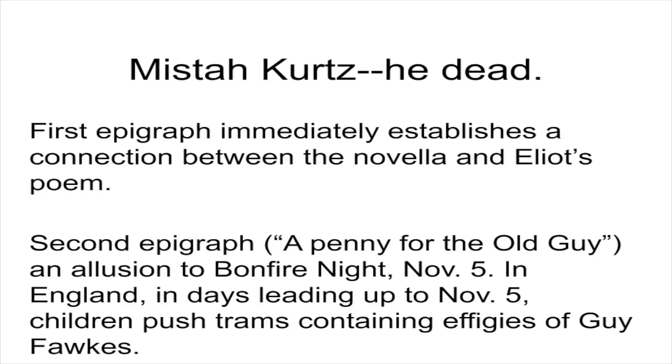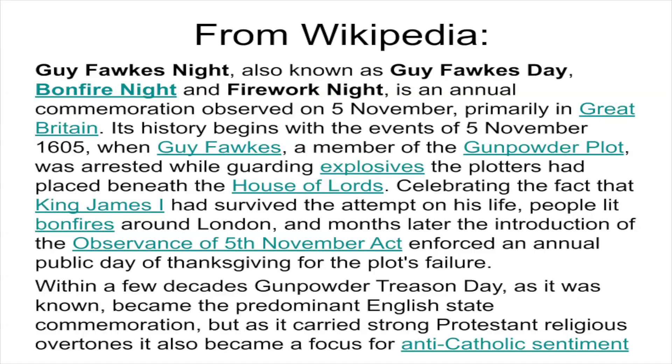'A Penny for the Old Guy' is a reference to the Gunpowder Plot. On November 5th, 1605, a group of conspirators were rolling kegs of black powder underneath Parliament, where King James I was going to speak, planning to assassinate him. They were discovered and their ringleader was Guy Fawkes. This event actually prompted Shakespeare to write Macbeth as an homage to King James, his sponsor, whose company was the King's Men. King James survived and they caught Guy Fawkes.